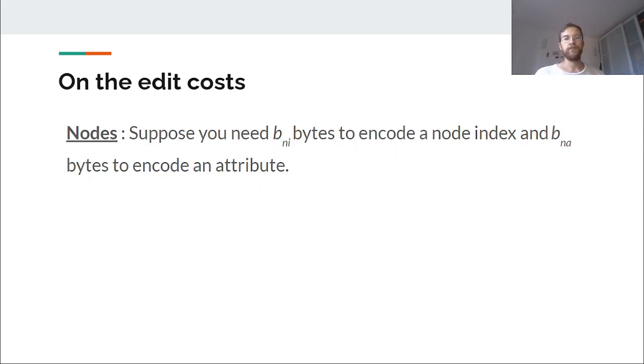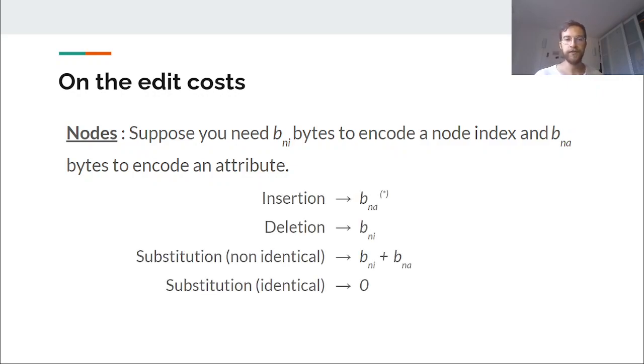Now, on the edit costs, let's have a small word on that. First, we calculate the number of bytes needed to encode a node index and a node label. This can be made before compressing and just after reading the collection. So you read the collection and you compute the maximum number of nodes, the number of attributes, what are their types and everything. And if you have these quantities, then you can define these costs. So inserting a node requires only a node label. Deleting a node, you just have to tell the index of the node you want to delete. And substitutions require both.